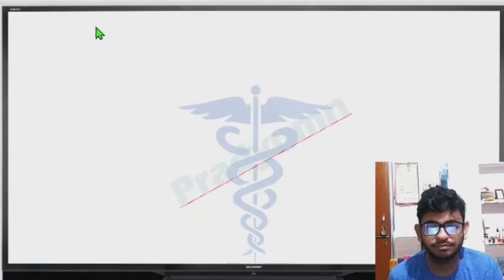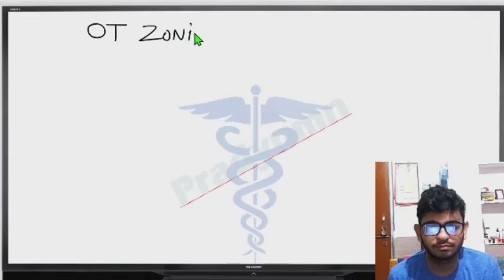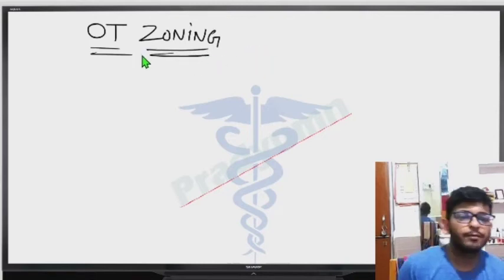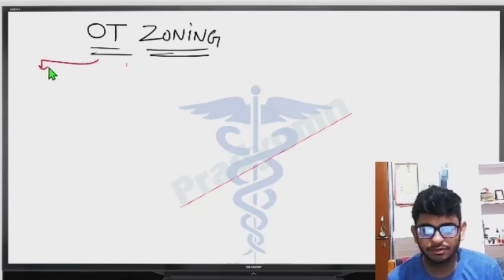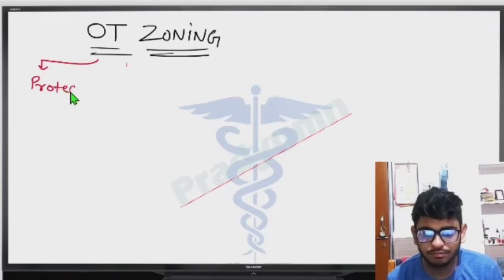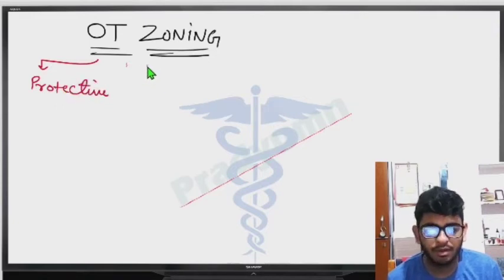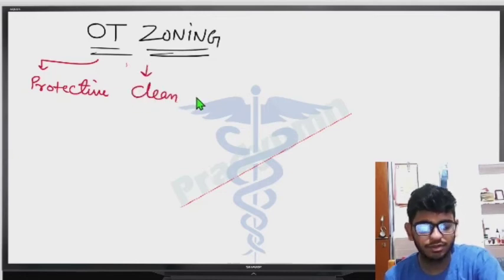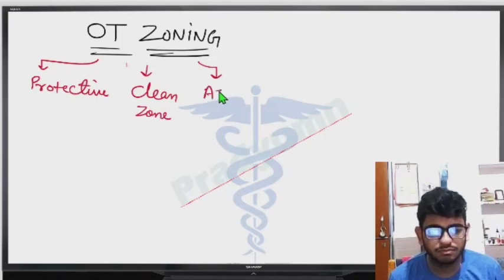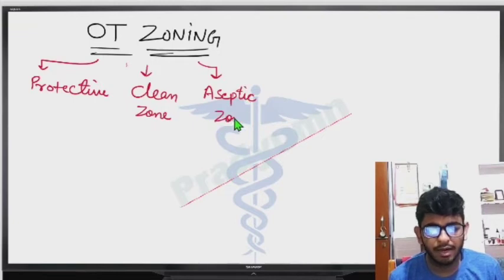OT zoning refers to the division of the operation theater into distinct zones. These zones include: first, a protective zone; then a clean zone; an aseptic zone; and a disposal zone.